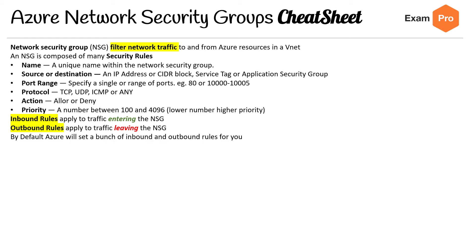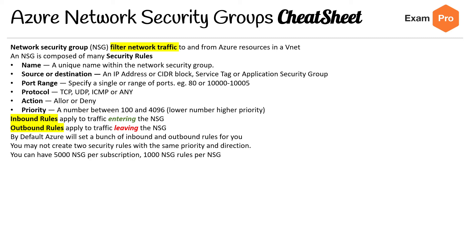By default, Azure will set a bunch of inbound and outbound rules for you. You may not create two security rules with the same priority and direction. You can have 5,000 NSGs per subscription and 1,000 rules per NSG.